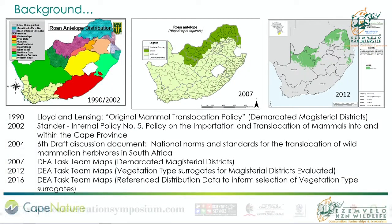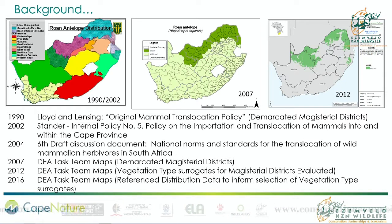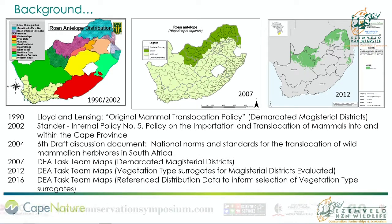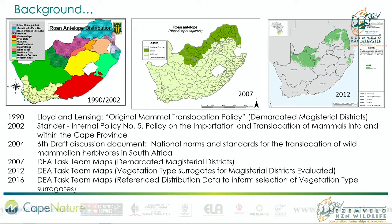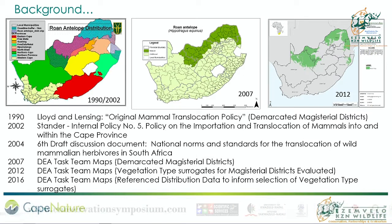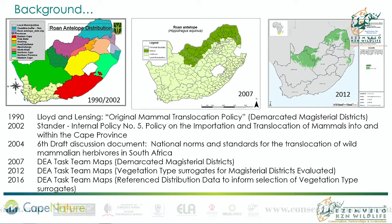Briefly, the background from a policy perspective: there's been a lot of work done over a number of years. In the 1990s in the Cape Province, we had the original mammal translocation policy, which identified — these are all Roan maps over the period — it covered all the species because we were looking at what was alien to the province. Then in 2007, the process culminated in maps with a dark area and a light green area, considered benign in terms of introductions, that being the natural distribution range. In 2012, the task team mandated by DEA looked at the history and started interrogating what we want to define, and we came up with initial maps that still had some gaps.